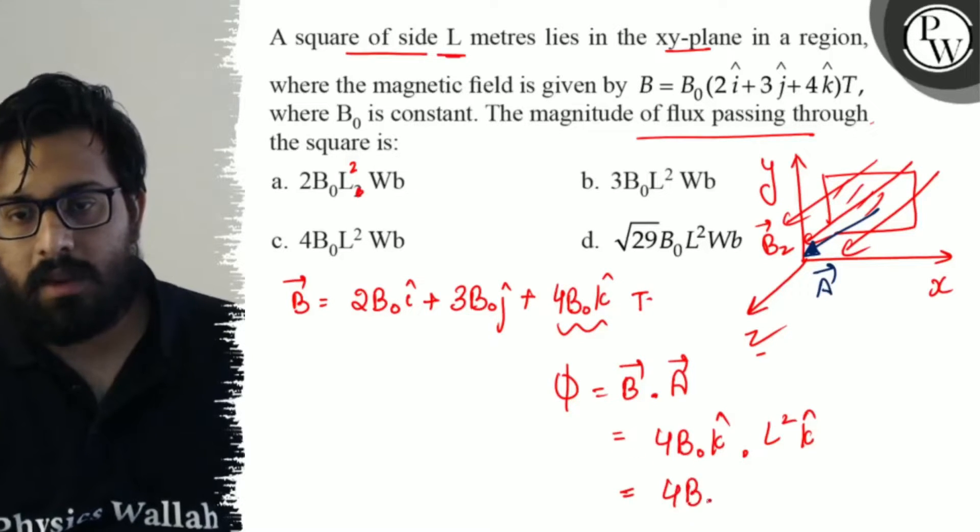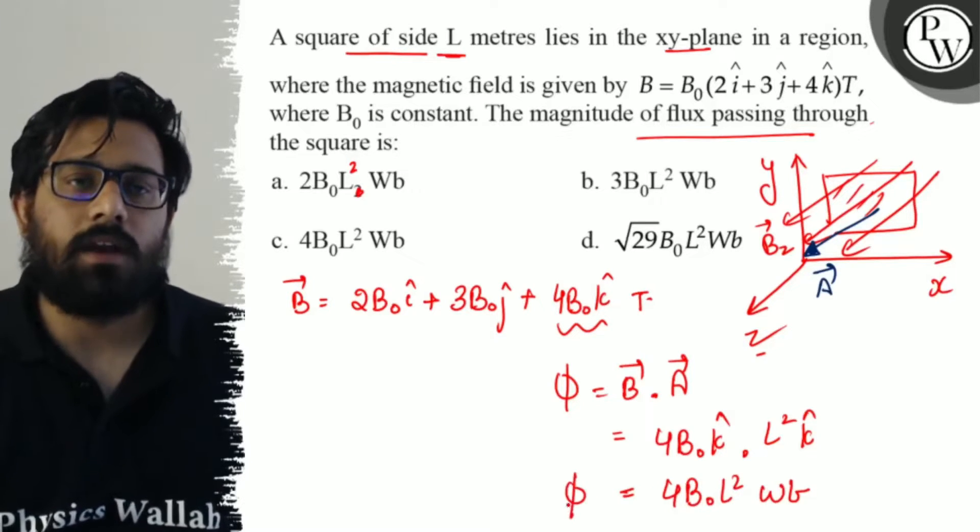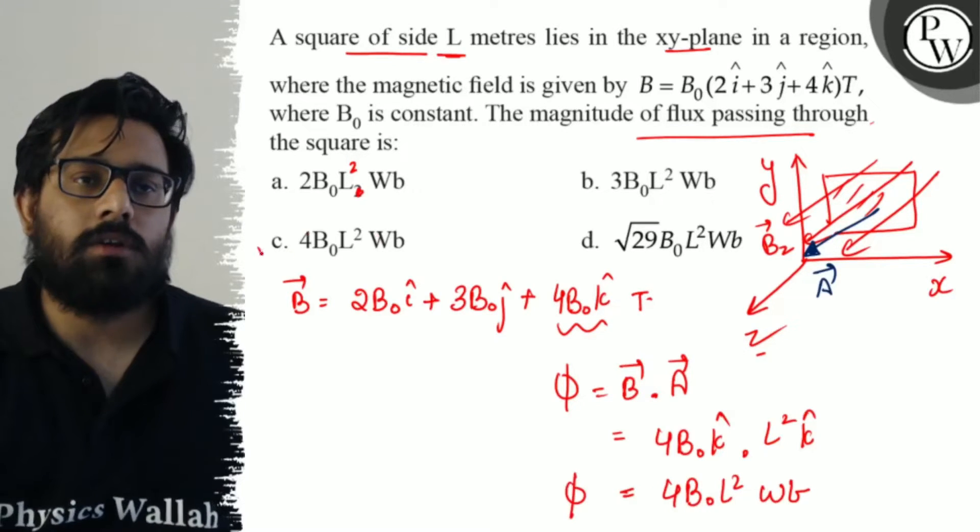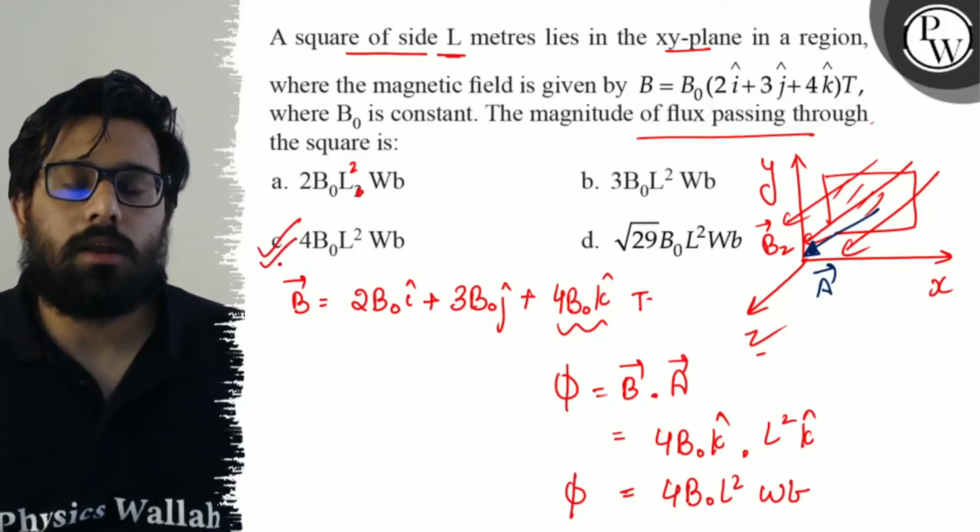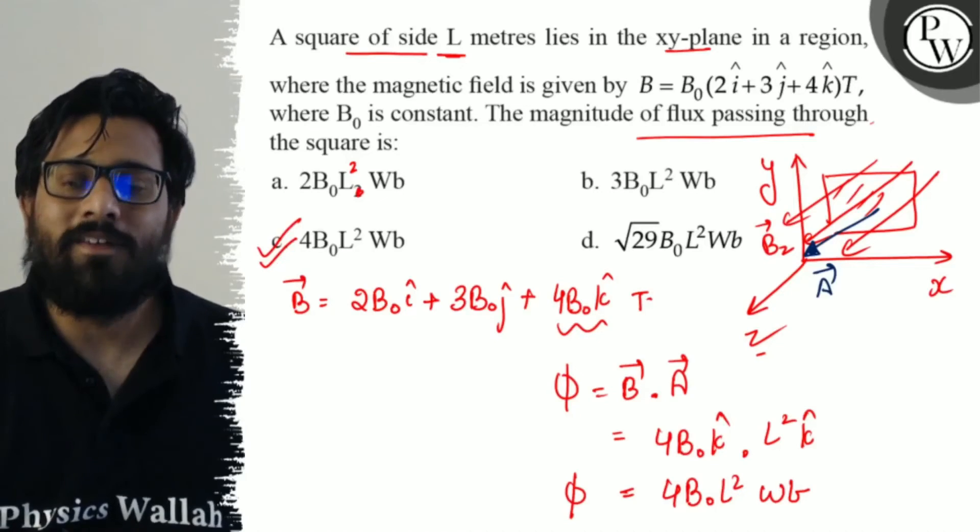The dot product gives the value of flux as 4B₀L² Weber. So the third option, 4B₀L² Weber, is the answer. I hope you get the concept of this question now, all the very best.